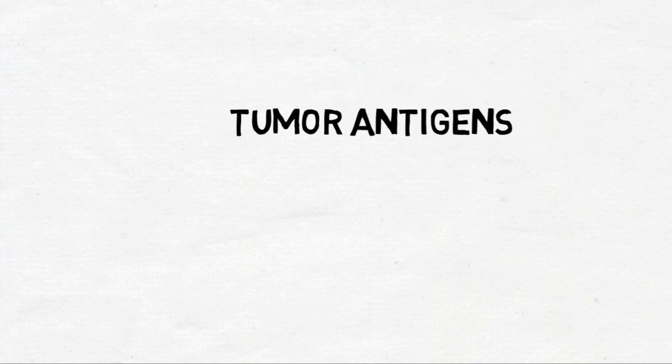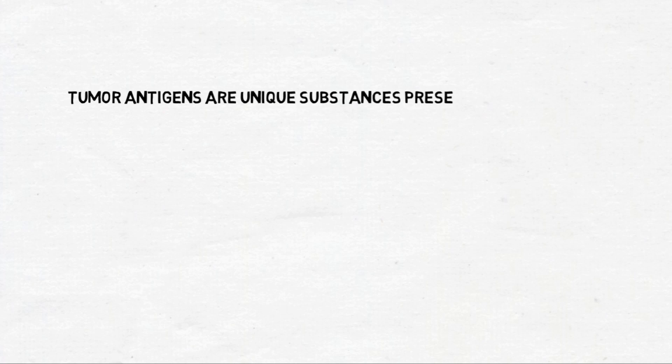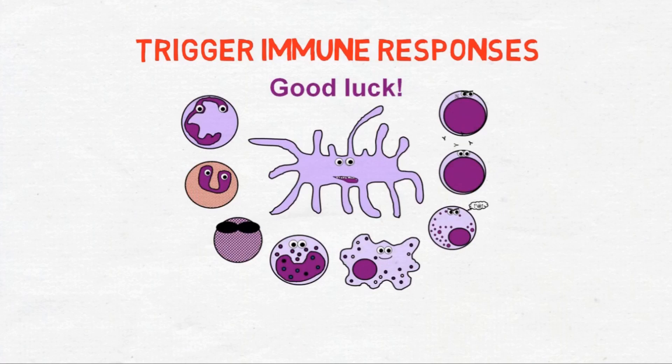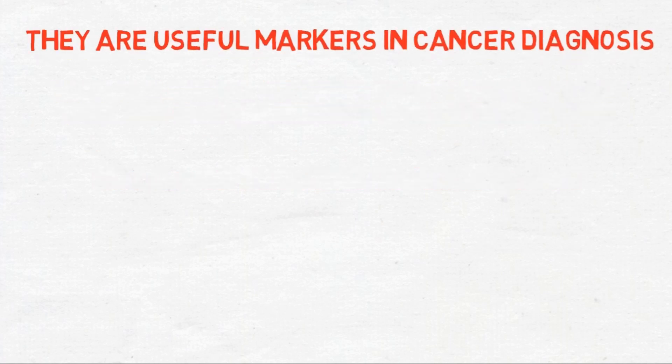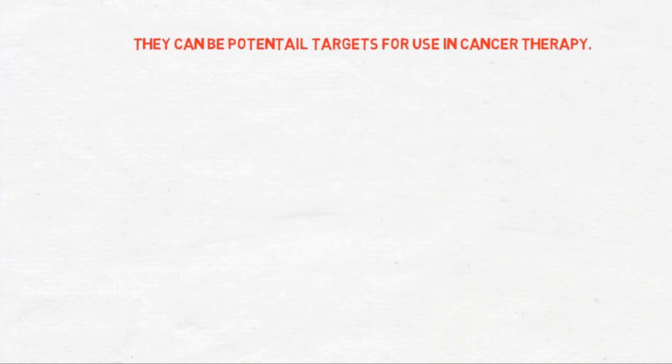Welcome to Beginners Biology. Today let's discuss tumor antigens. Neoplastic cells contain antigenic substances; these antigens are associated with them and are subjected to trigger immune responses in the host. Tumor antigens are useful as tumor markers in identifying tumor cells with diagnostic tests and are potential targets for cancer therapy.